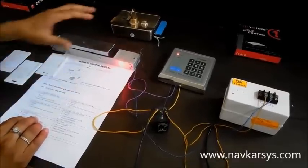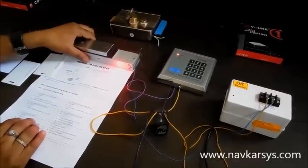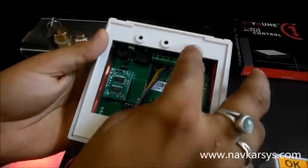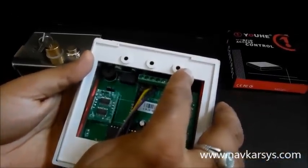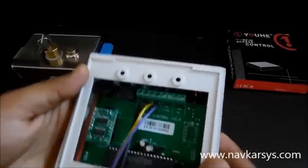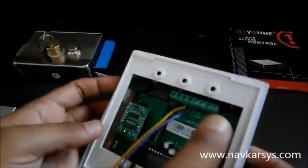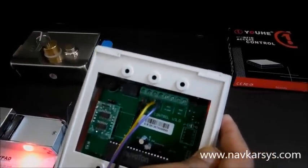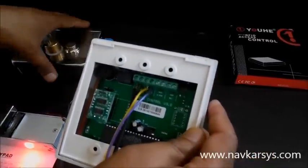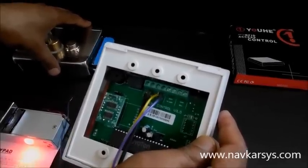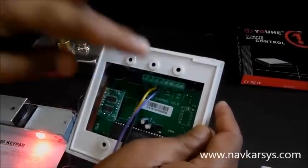When using the electromagnetic lock, the jumper settings should be configured as follows: there is an NO NC jumper on the back side, on the above side. It should be set with the common and NO when using the electromagnetic lock. So NO and common should be shorted. When using the electronic lock, NC and common should be shorted with the jumper. This is the setting for the jumper.